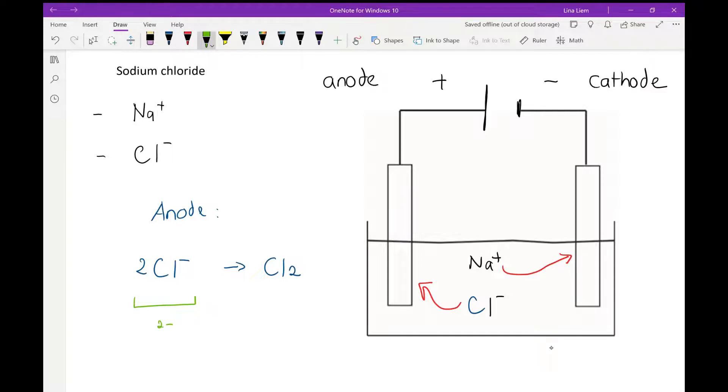How we balance it is by adding electron to one of the sides. In this case, if we add two electrons on the right hand side then we make a total of negative two charge there. This also means that chloride releases two electrons. Now, lose electron is oxidation, so this is an oxidation reaction.